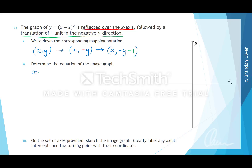The first equation says that the transformed x value is just equal to x, and the next part says that the transformed y value is equal to negative y minus 1. Next, we want to solve for the non-dash terms. So we have x is equal to x-dash for the first equation. For the second equation, we add 1 to both sides, finding that negative y equals y-dash plus 1, and then multiplying both sides by minus 1 gives y equals negative y-dash minus 1.